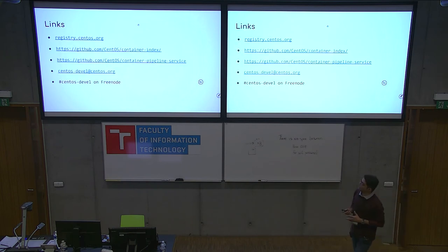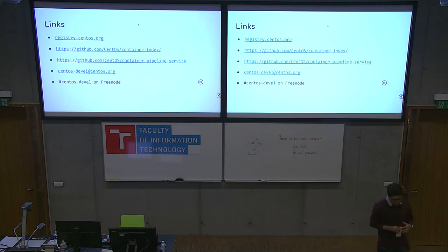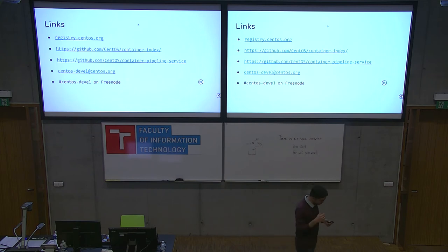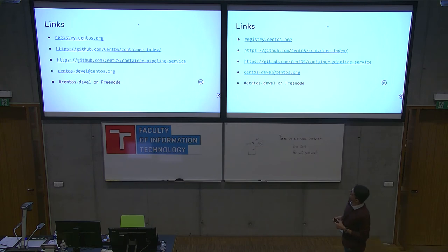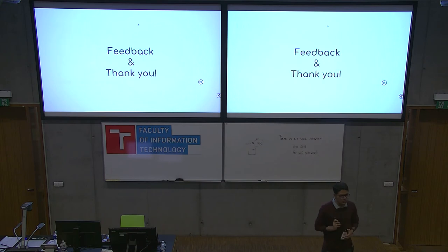A few quick links: if you want to look at the containers we're building right now, it's registry.centos.org. If you want to get onboarded with the service and build your container images through us, it's github.com/centos/container-index. If you want to look at our code base, it's github.com/centos/container-pipeline-service. And if you have any queries, shoot us an email at centos-devel@centos.org or find us on Freenode.